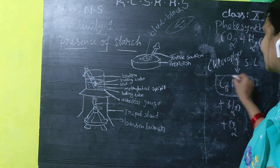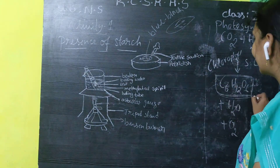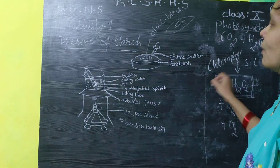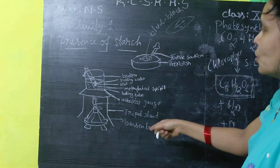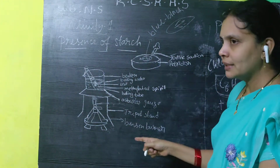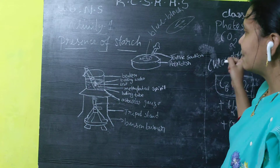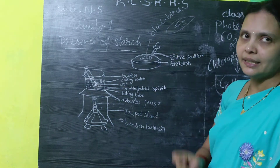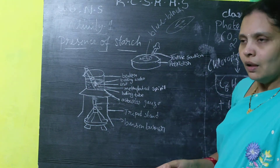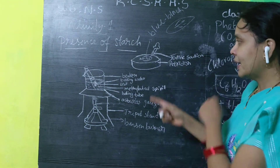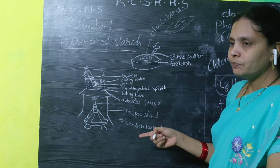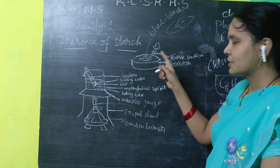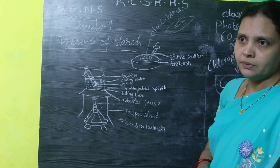Where starch is present inside the leaf, it means the plant has carried out the process called photosynthesis. By photosynthesis, the plant prepares starch material. By this activity you confirm that during photosynthesis the plant prepares starch. It is a simple experiment about the presence of starch in a leaf.